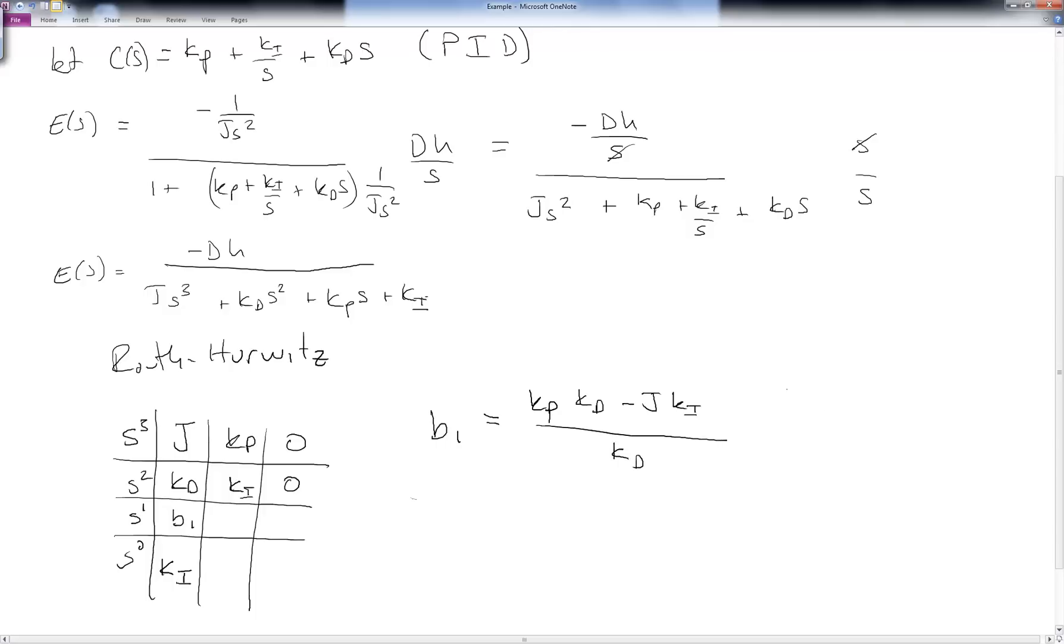For stability, j is positive because it's an inertia term. That means that kd also has to be positive, and we also need that ki has to be positive. And over here, this has to be then greater than zero, this whole term. And so we can multiply through by kd and simplify and solve for kp, which says that kp then has to be greater than j times ki over kd. And this system will be stable.